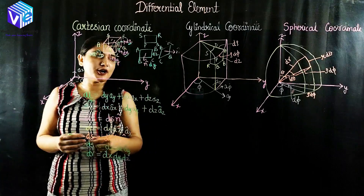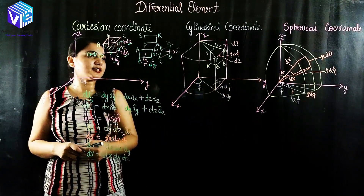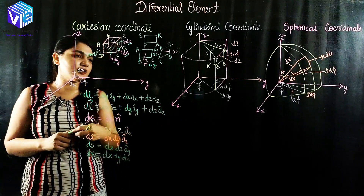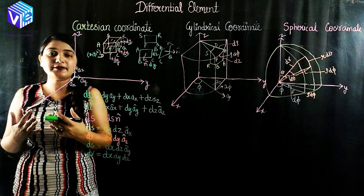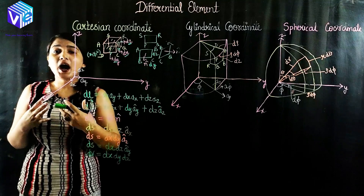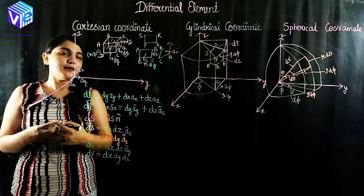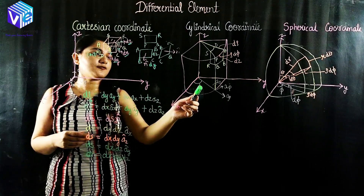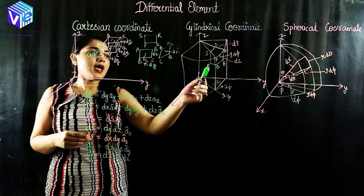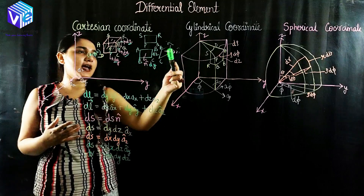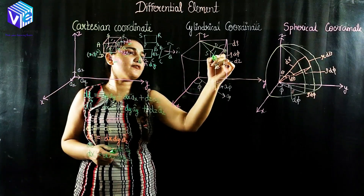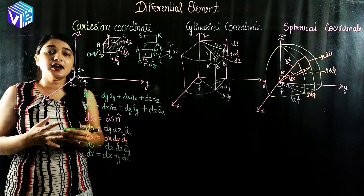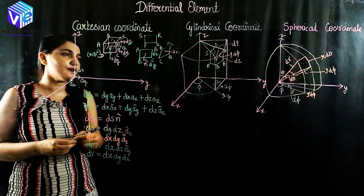Now we will move toward the cylindrical coordinate system. In this cylindrical coordinate system we have rho, phi, and z directions. If you have not watched the previous video on these three coordinate systems, I strongly recommend you watch it first. Here phi is the azimuthal angle, rho is the radius, and z is the height. We will look at a very small differential cylindrical surface.